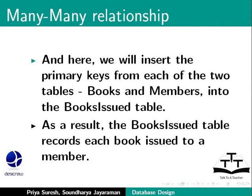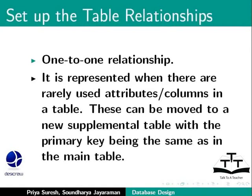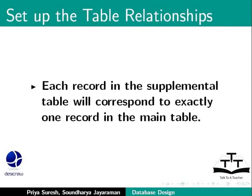Finally, there is the one-to-one relationship. Sometimes, some attributes or columns are specific to certain data only and so are rarely filled up with data. Let us consider the case where only one author has a website address and the rest do not. Leaving a website column in the authors table mostly empty would consume disk space. So, we can move this column into a new supplemental table whose primary key will be the same Author ID. Each record in the supplemental table will correspond to exactly one record in the main table, which represents a one-to-one relationship.